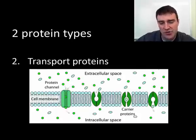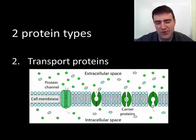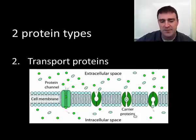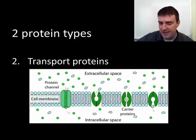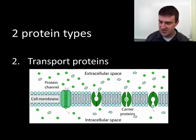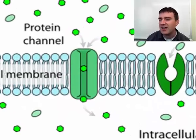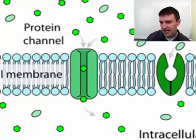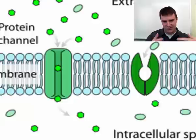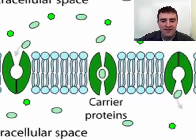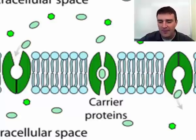There are also transport proteins, which we'll cover more in the next unit. In brief, they're a really important part of the cell membrane. They have specific shapes to interact with specific chemicals — just like all proteins — except that unlike enzymes, they don't turn the chemicals they interact with into other chemicals. They just let chemicals through the cell membrane, either into or out of the cell, and they're very particular about what they let cross.